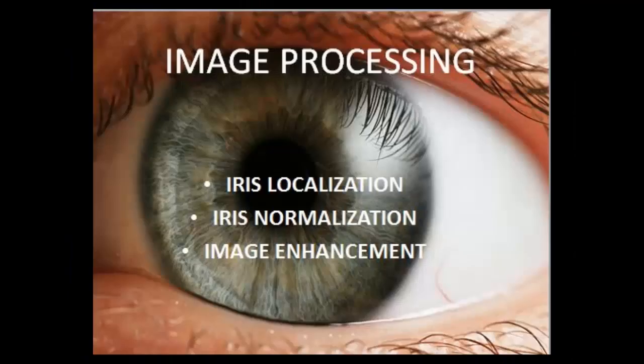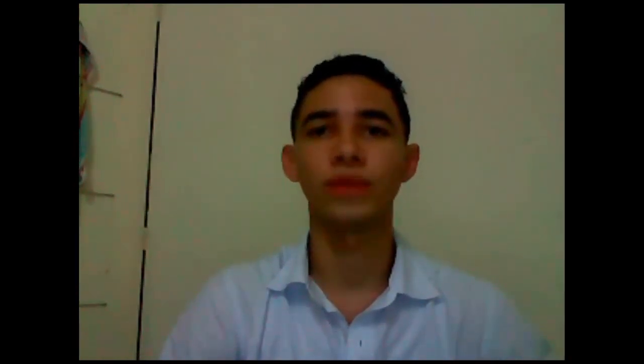Usually, this process is composed of three steps. The first is iris localization. It is common to assume both the inner and outer boundary of a normal iris as circles. To detect the inner boundary, thresholding is performed, taking into account that the pupil is much darker compared with the other parts of the eye. The outer boundary presents more trouble due to the low contrast between the two sides, but it can be handled by means of the second derivative.